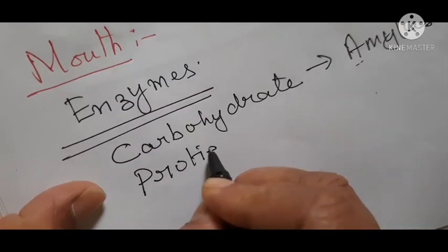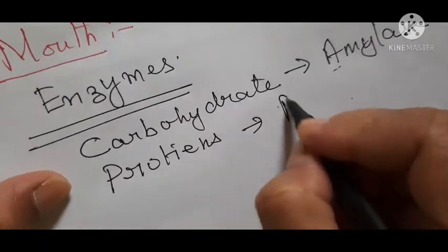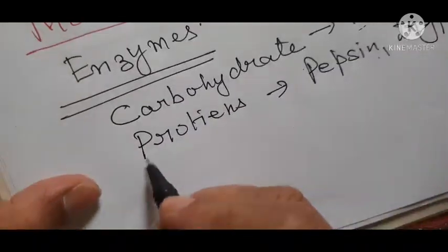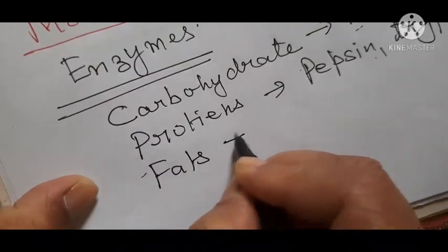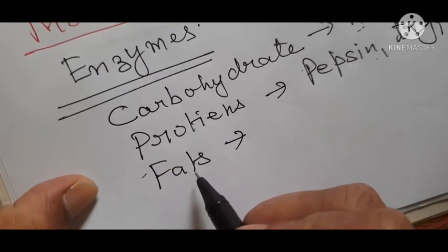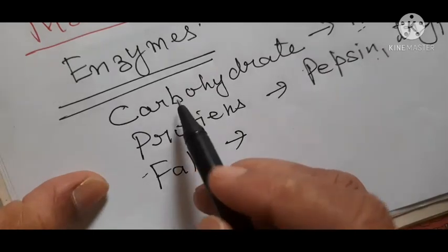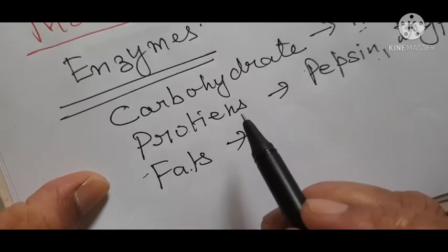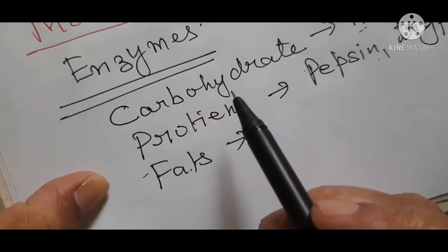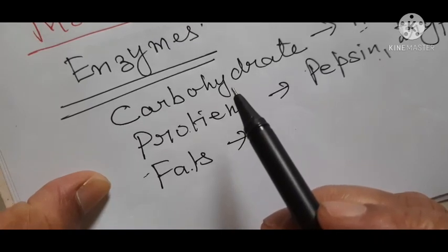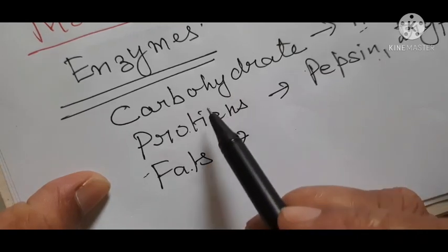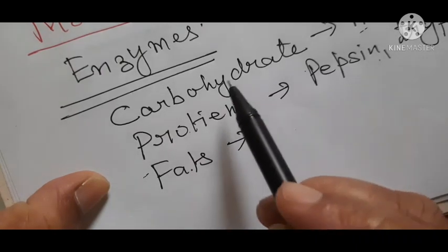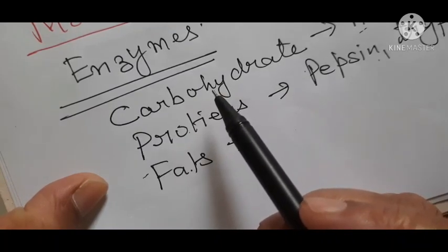Another complex nutrient is proteins. Proteins are digested with the help of enzymes called pepsin and trypsin. Fats are also complex nutrients. The teeth and muscular contractions of the stomach can only break bigger food particles but not the nutrients. For nutrient digestion of carbohydrates, proteins, and fats, enzymes are needed, and enzymes are called biocatalysts.